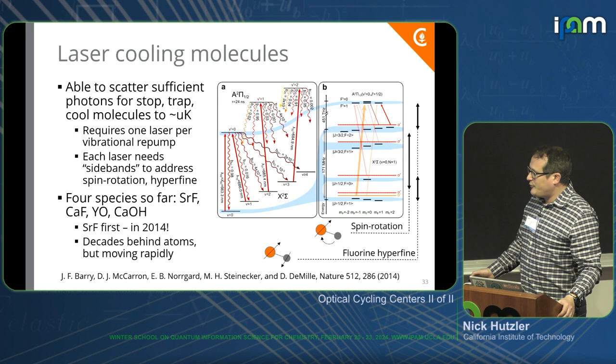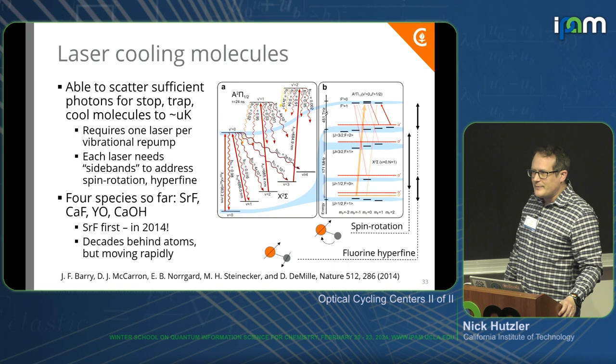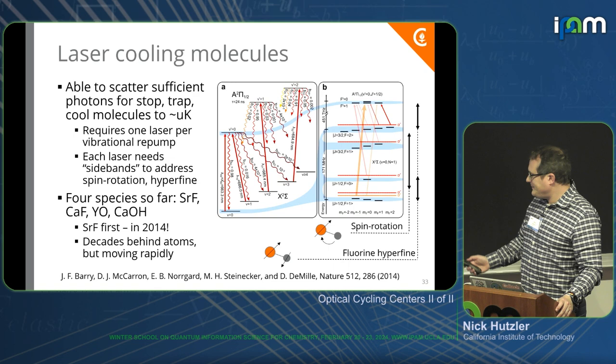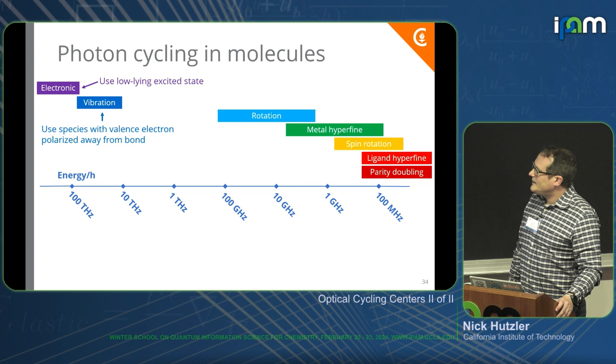It's still fairly new — only four species. This has only happened for four species, and they're all of this sort of type: a single unpaired S electron polarized away from the bond-type molecule.